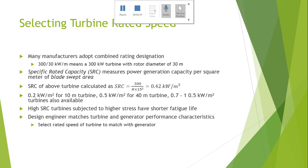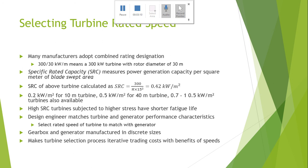The design engineer matches the turbine and generator performance characteristics by selecting the rated speed of the turbine to match with the generator attached to the turbine rotor. The gearbox and generator are manufactured in discrete sizes, which makes the turbine selection process iterative, trading cost against the benefits of increasing or decreasing speed.